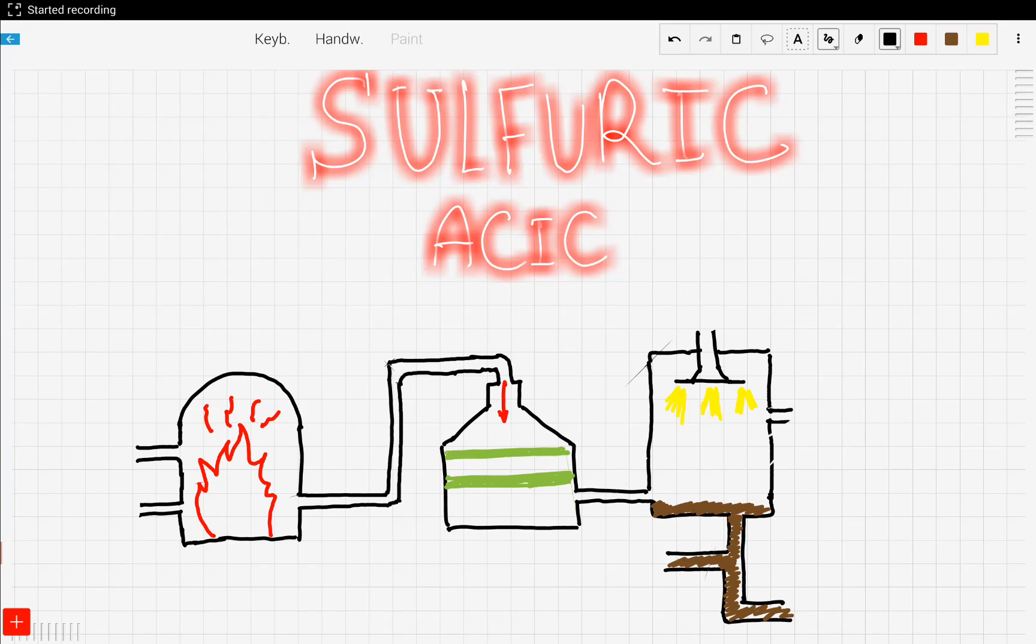Hey everyone, now we're going to continue our discussion of sulfur and go into the details of how sulfuric acid is made. Sulfuric acid has the formula H2SO4 and it's made by a process called the contact process.